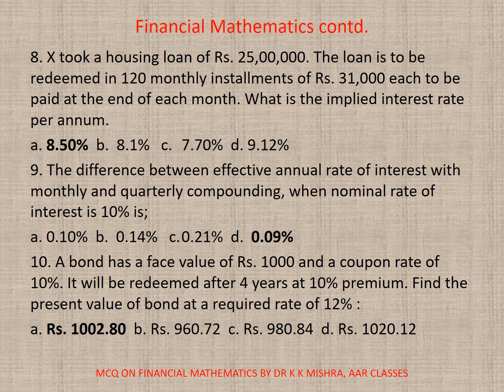Question 9: The difference between effective annual rate of interest with monthly and quarterly compounding when nominal rate of interest is 10% will be — correct option is D — 0.09%.